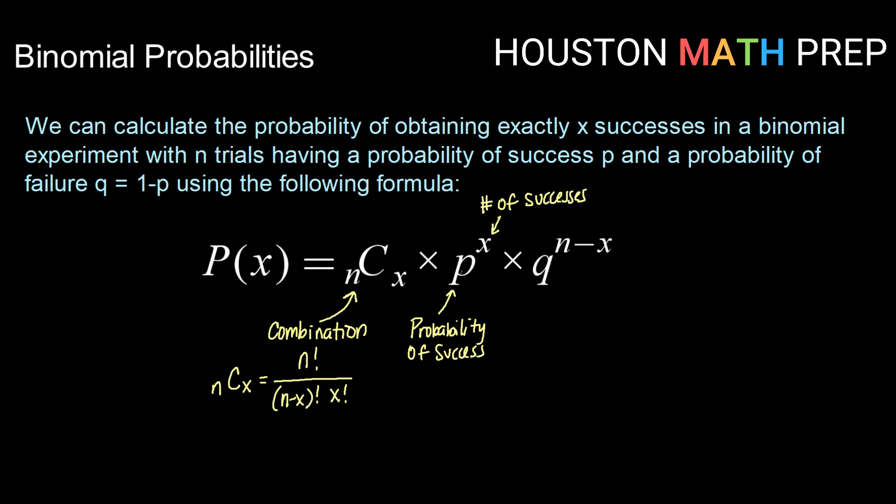We're raising the probability of success to the number of successes power, then multiplying that by the probability of failure q raised to the n minus x power. If we have n trials and x successes, then n minus x is the number of failures. So we have probability of success raised to the successes power times probability of failure raised to the failures power, all multiplied by our combination n choose x.